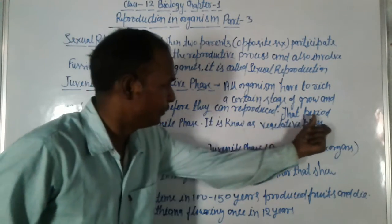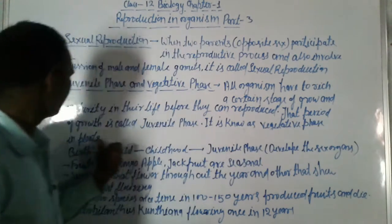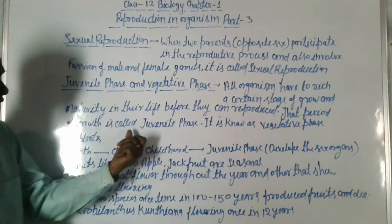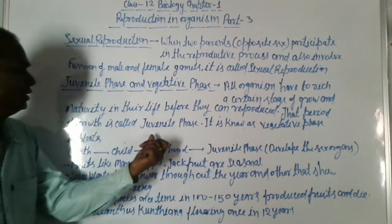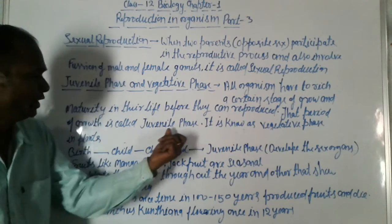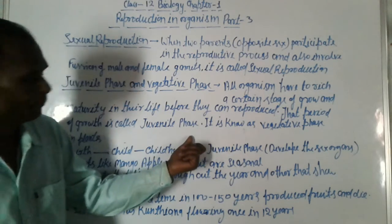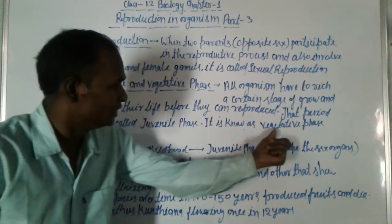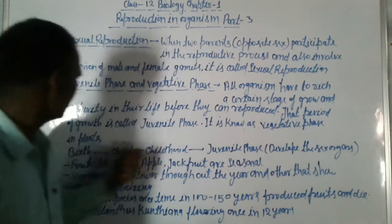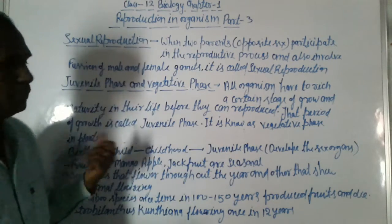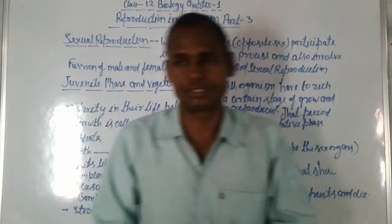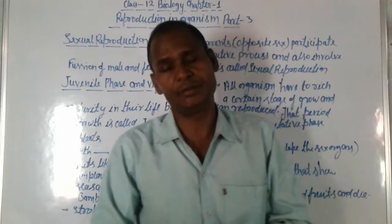An organism has to reach a certain stage of growth and maturity in their life before they can reproduce. That period of growth is called the juvenile phase. It is known as the vegetative phase in plants.